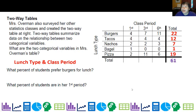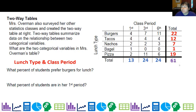Now if I go by class, I get slightly different numbers because here I'm just comparing everybody in the class. So in first period I had a very small class; third was 24 and sixth was 24. And if you add those up, that also adds up to 61. So this is what I like to call the total total, because it's the total both vertically and horizontally.